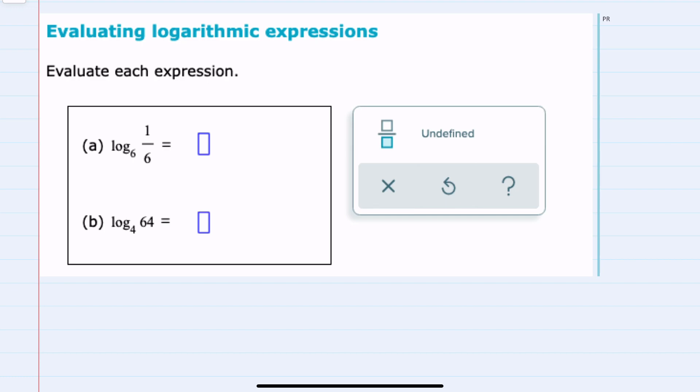So if we want to know what the log base 6 of 1/6 is, the question that the log is asking is: what exponent would we need to raise 6 to to have a result of 1/6, which is what we are taking the logarithm of? The base of the logarithm, 6, needs to be raised to what power to get the result of what we're taking the logarithm of, 1/6?